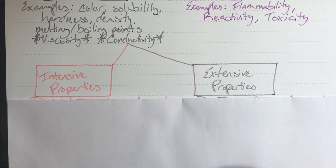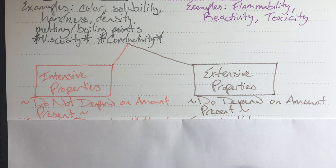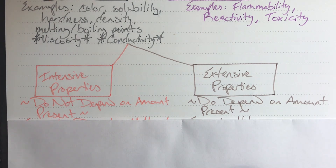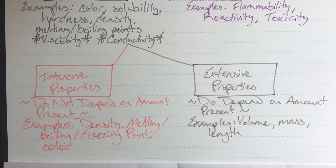Physical properties can be broken down into further subcategories: intensive properties and extensive properties. An intensive property does not depend on the amount of the compound present. Intensive means internal — it is fundamental to the compound or element itself, and those properties will stay true forever. Some examples of an intensive property would be density, melting or boiling points, freezing points, and color.